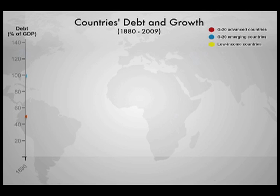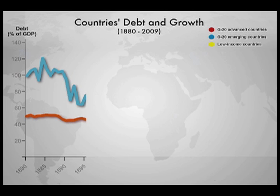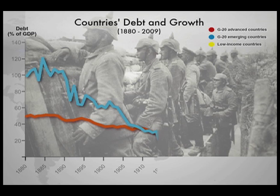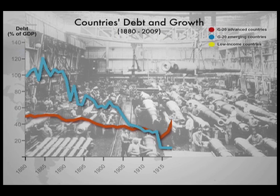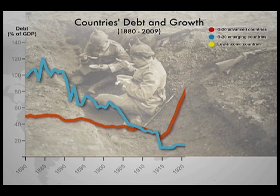Looking back, we see debt ratios in advanced economies, pictured here in red, declined from 50% of GDP from 1880 to below 30% just before World War I. Debt spiked with the war and debt ratios reached almost 100% of GDP in the early 1920s.